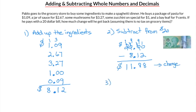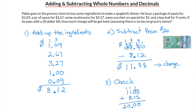The last thing to do is check that we've got a reasonable answer. We can add the $8.12 and the change, $11.88, and it should add up to $20. So: $11.88 plus $8.12, making sure the decimals line up — 8 plus 2 is 10, carry the 1; 8 plus 1 plus 1 is 10, carry the 1; 1 plus 1 plus 8 is 10, carry the 1; and 1 plus 1 is 2. We end up with $20, so we're confident that our answer of $11.88 in change is correct.